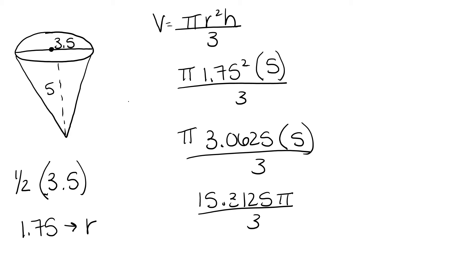We divide that number by 3 to get 5.10416 repeating. And then keeping all of that in the calculator, we don't round just yet. We multiply by pi using the fraction in the directions, 22 over 7, to get 16.0416 repeating.